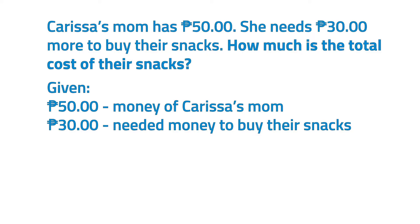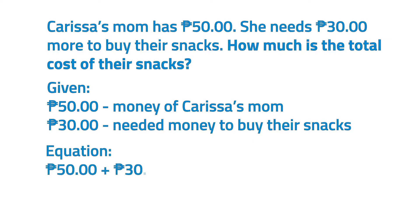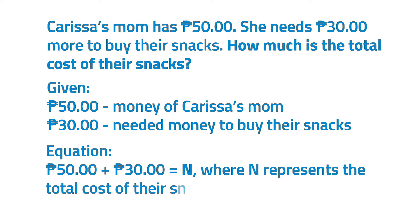For step 2, let's plan what to do. To find the total cost of their snacks, we have to add the amount of money Carissa's mom has and the amount of money she needs more. So the equation will be 50 pesos plus 30 pesos equals N, where N represents the total cost of their snacks.